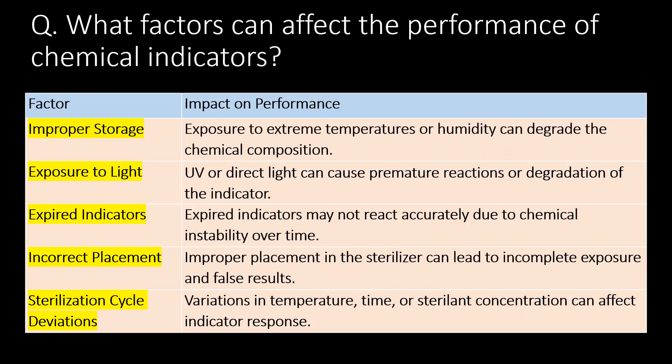What factors can affect the performance of chemical indicators? You can refer to the bullet table for the different factors that affect the performance of a chemical indicator. Key factors include improper storage, exposure to light, expired indicators, incorrect placement, and sterilization cycle deviations.